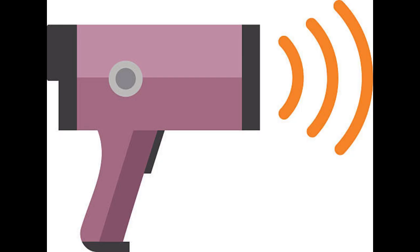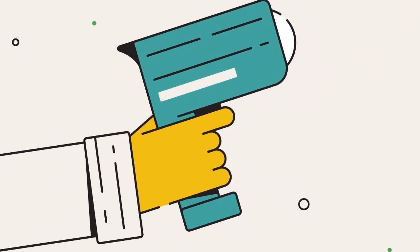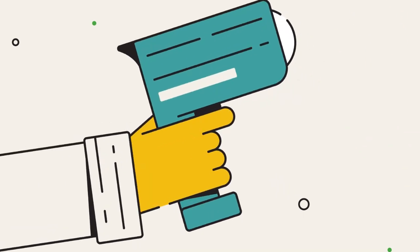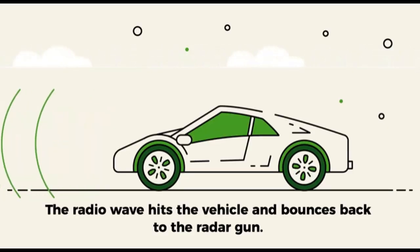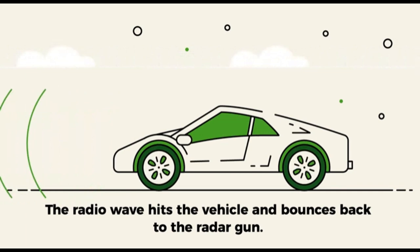The radar gun emits a narrow radar beam, typically in the form of radio waves or microwaves, in a specific frequency range. This radar beam is directed towards the targeted vehicle. The beam strikes the targeted vehicle and reflects back to the radar gun.